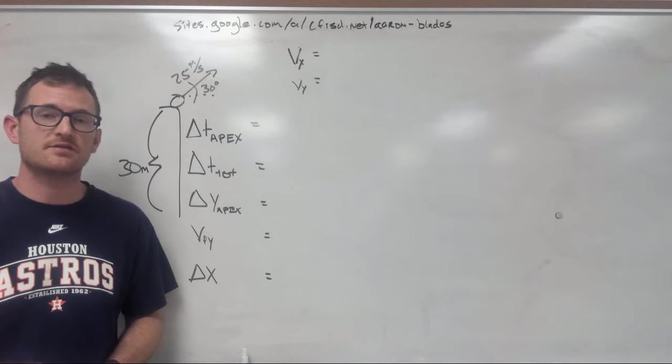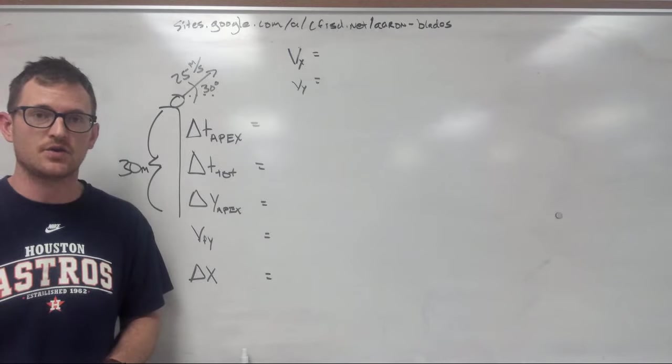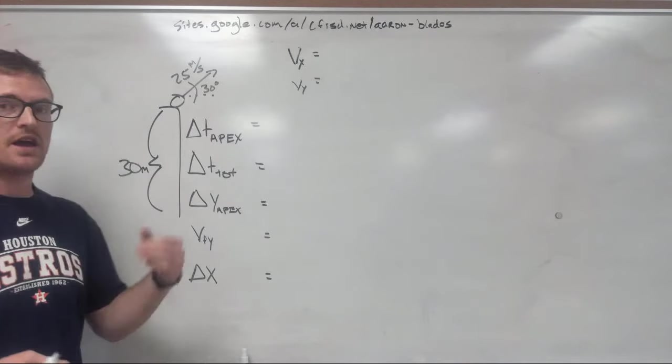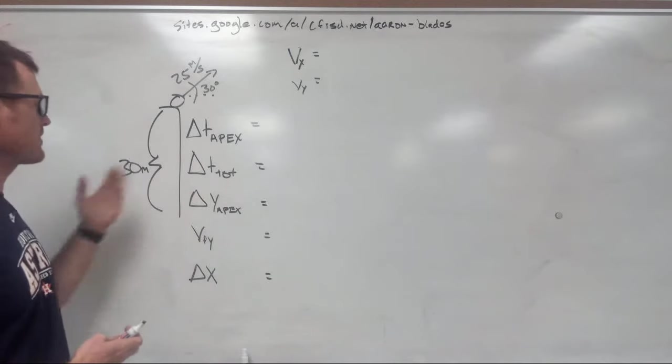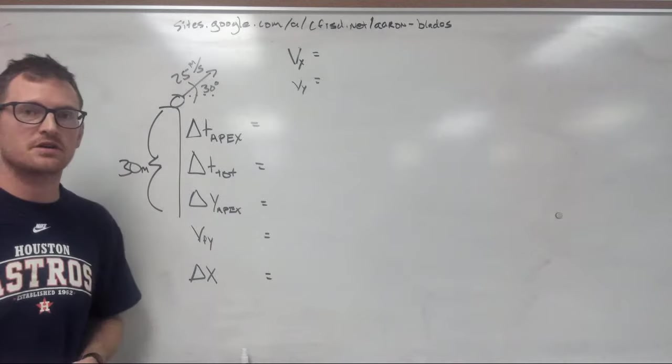Good afternoon and welcome to your science review with Mr. Blaze. Today we're going to be doing a projectile motion problem that includes an inclined angle. So let's take a look at the picture. From my picture, you can tell that our problem statement is that we have an object launched from a 30-meter platform at 25 meters per second at a 30-degree angle.